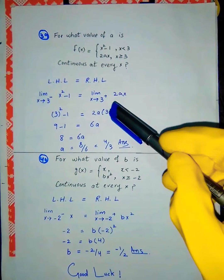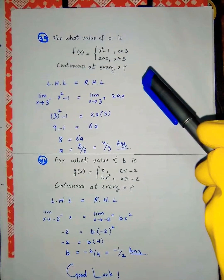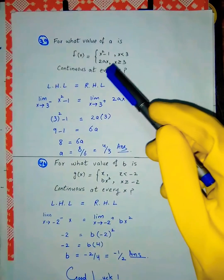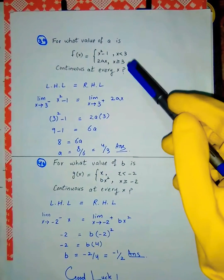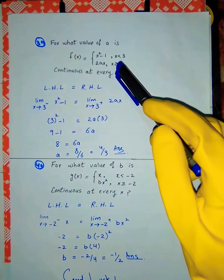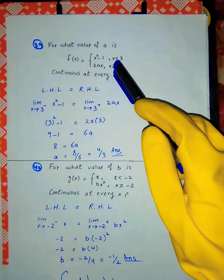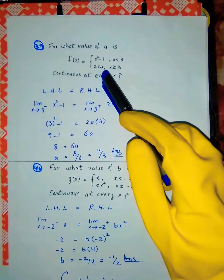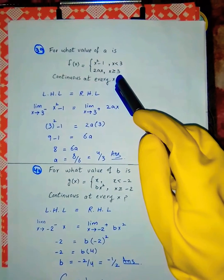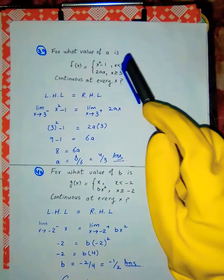New question: For what value of a is f(x) continuous? f(x) is a piecewise function: x² - 1 when x is less than 3, and a when x is greater than or equal to 3.